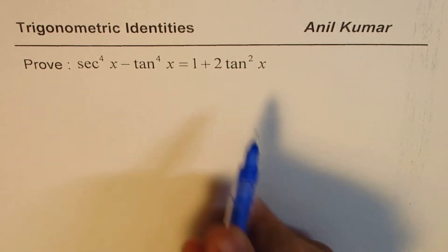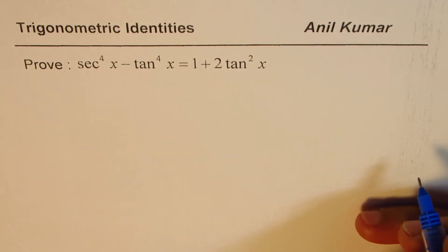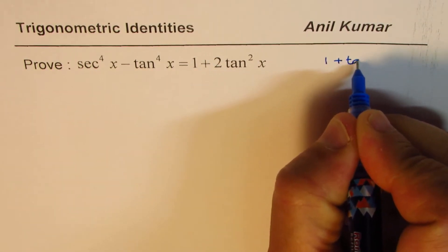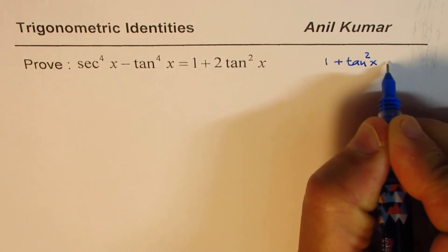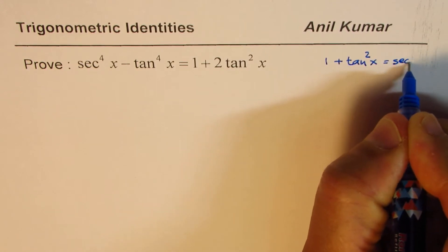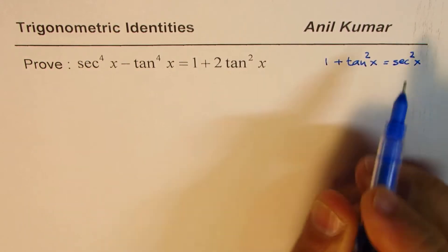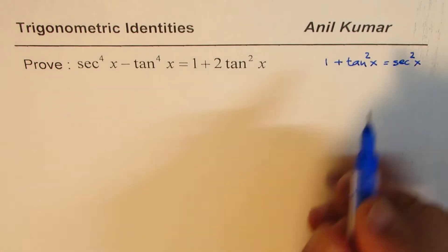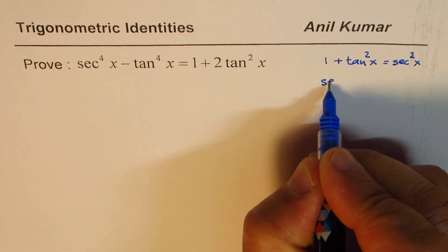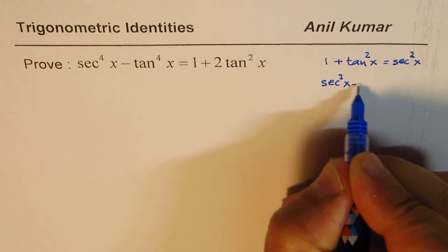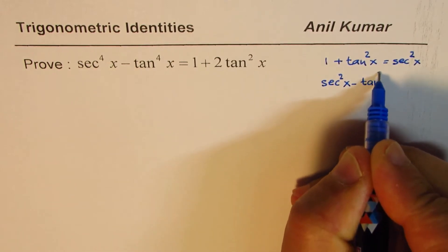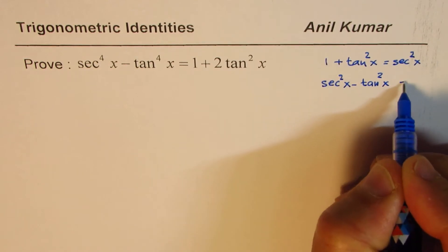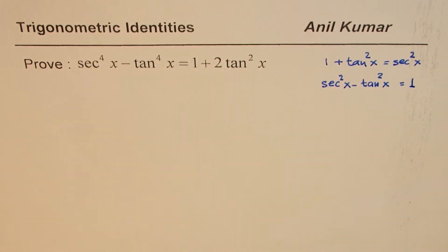Now to prove this identity we can use the Pythagorean trigonometric identity which is 1 plus tan square x equals secant square x. You could actually rearrange this in the form which is similar to the left side as secant square x minus tan square x, bringing tan to the right side leaves 1 here, so that should be equal to 1, and that could be utilized.